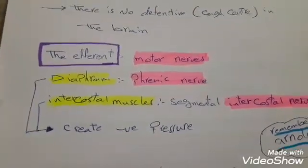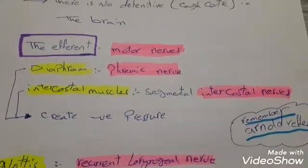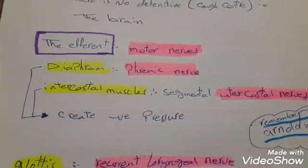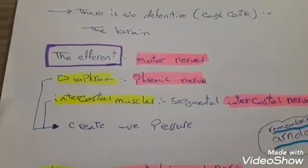The diaphragm, mediated by the phrenic nerve, and the intercostal muscles, mediated by the intercostal nerves, will create the necessary negative pressure for the cough.